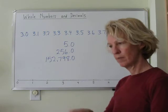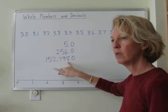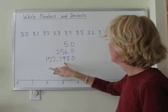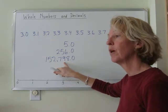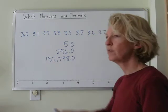Now for whole numbers, we know that the first position is for the ones, and then the next one over is for the tens, hundreds, and the thousands.